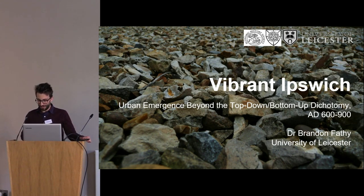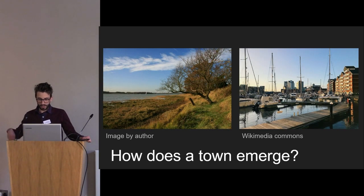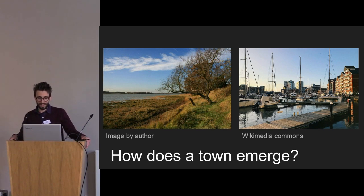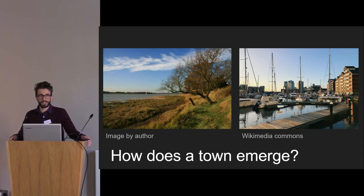Some of you will be familiar with this really wonderful early medieval town. Although I'm probably quite critical of V. Gordon Childe's theory in almost every way, his very fundamental question still generally frames my research interest, which is the origins of towns and cities. These images are both of Ipswich, and I am interested in how a place goes from the image on the left, which is the River Orwell, to the image on the right.